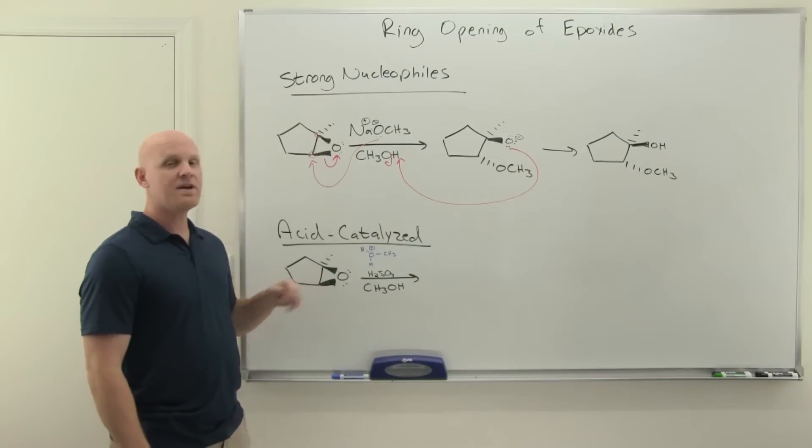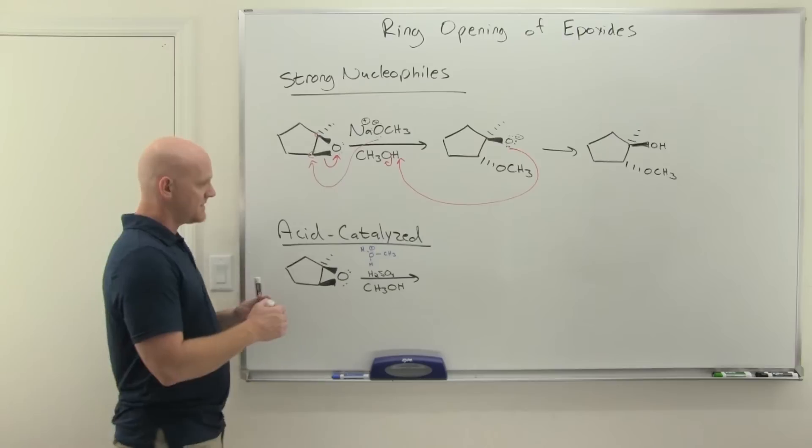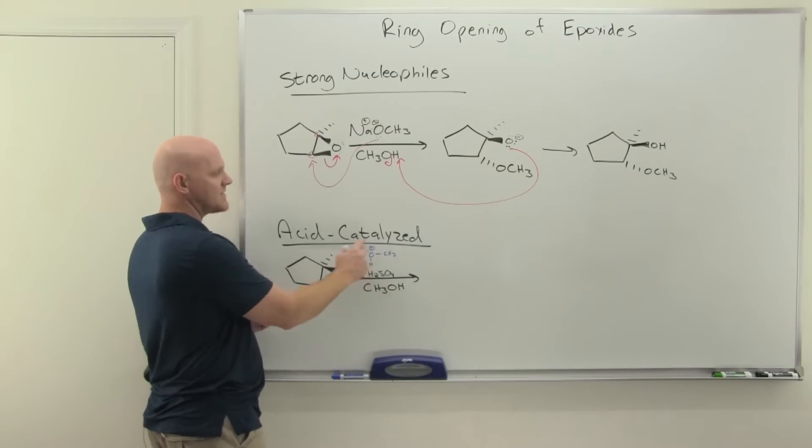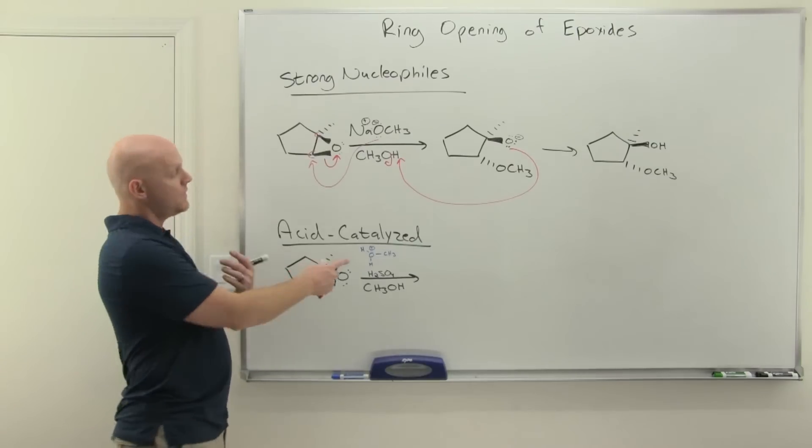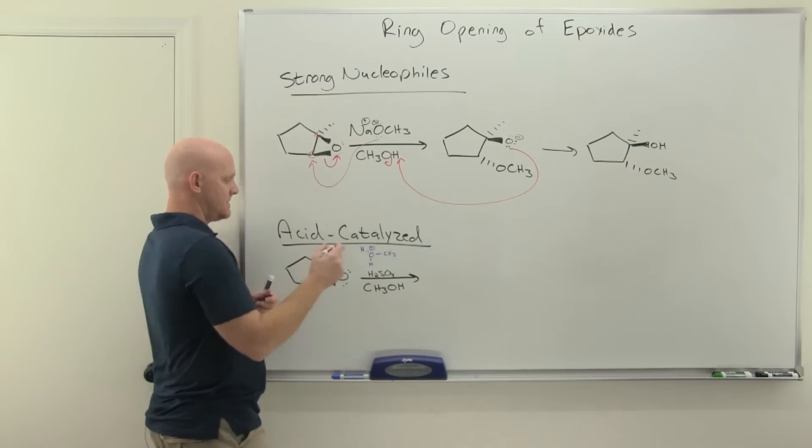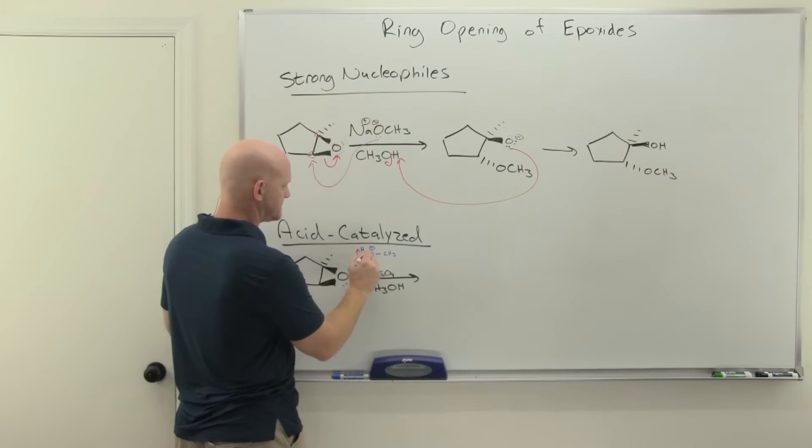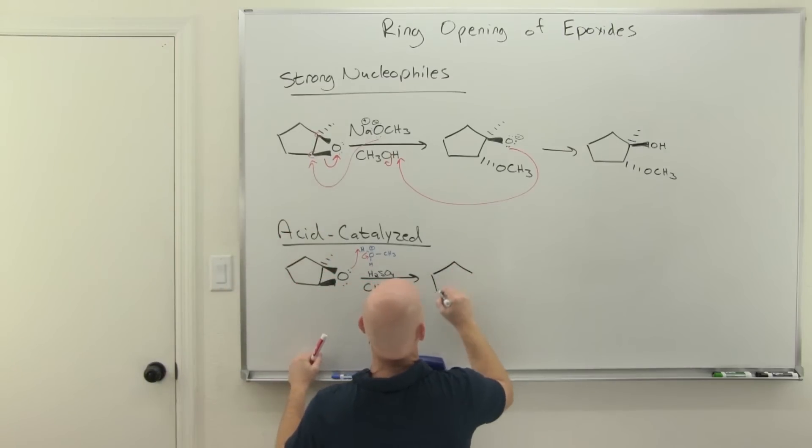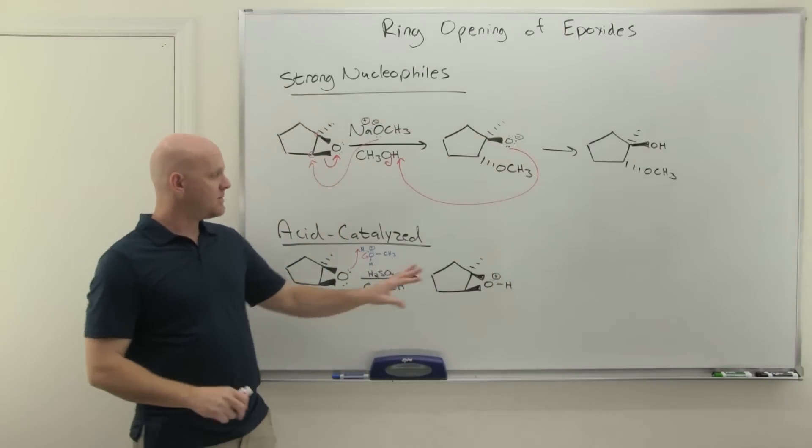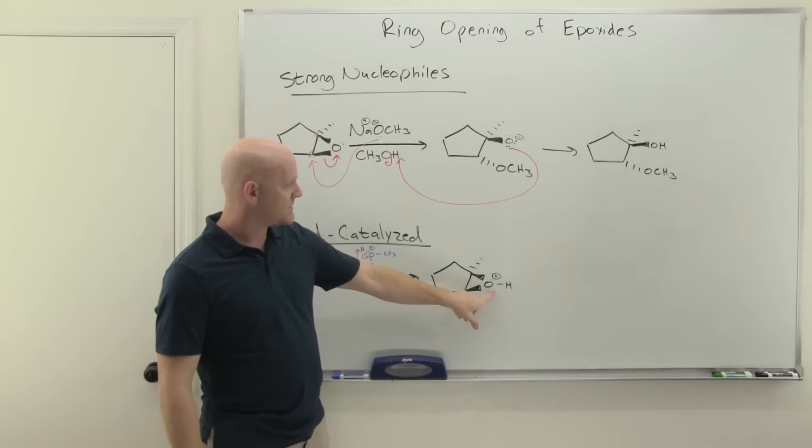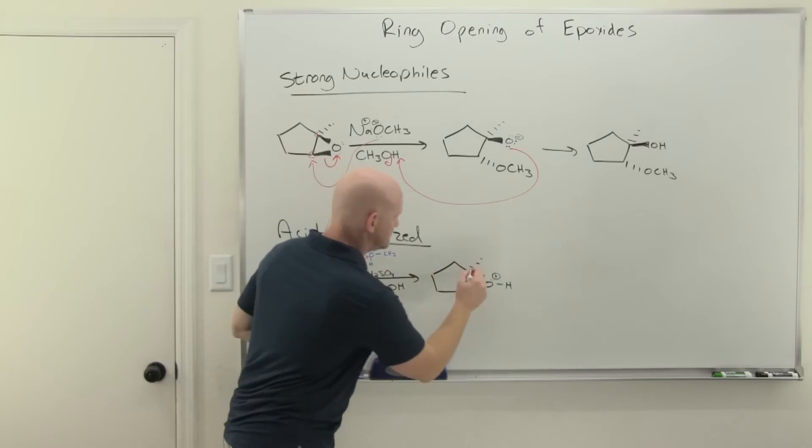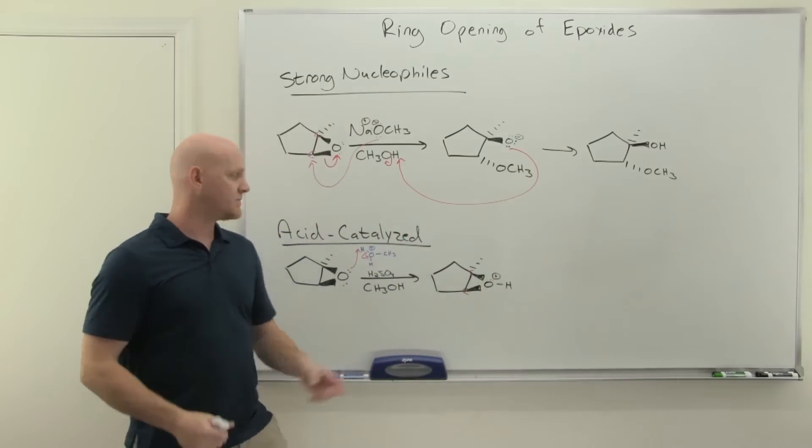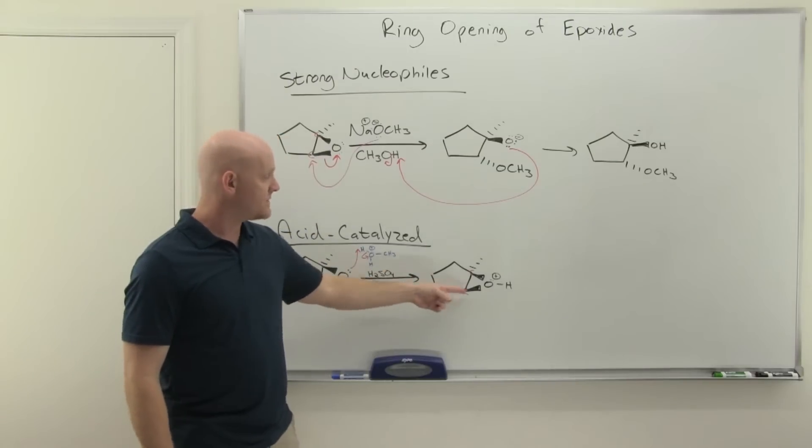It turns out the first step is actually to protonate the oxygen when you're under acidic conditions. If you've got a strong acid and an alcohol, you're typically going to protonate that alcohol. Just like when you have strong acid and water, you protonate the water and form hydronium. This is the equivalent of hydronium for an alcohol. That's actually probably what actually protonates this. By protonating that epoxide, we've now made this actually significantly more reactive. With a positive oxygen here, these two carbons are even more partially positive. That oxygen is even more electron withdrawing, and so these are even better electrophiles.